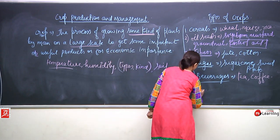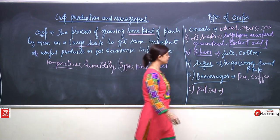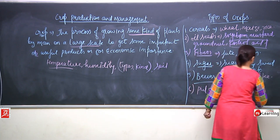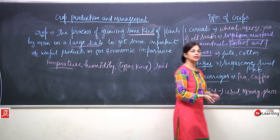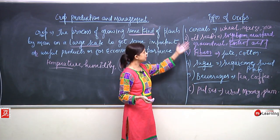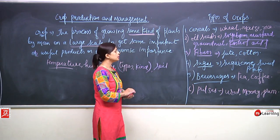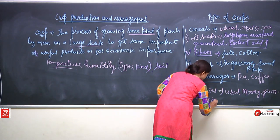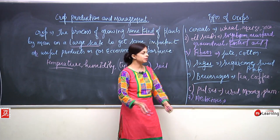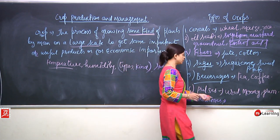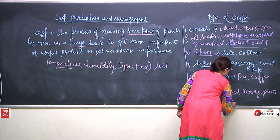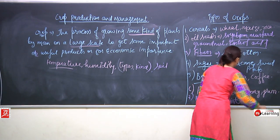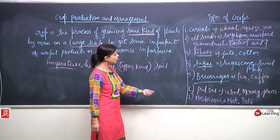Pulses — what comes under the category of pulses? Maybe urad, maybe moong, maybe gram — all different kinds of pulses and dals which we normally eat. Likewise, we can divide into more categories. Even medicines — many plants are there like cinchona, or maybe ashwagandha.